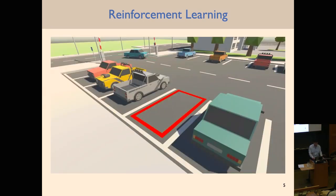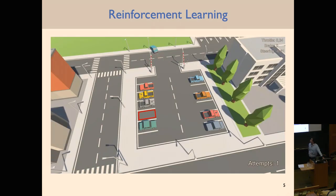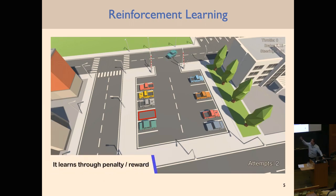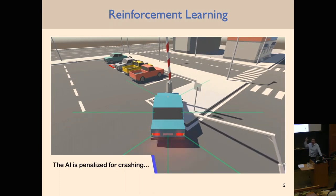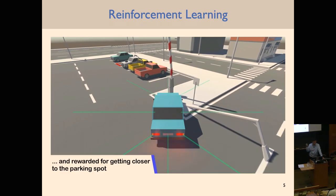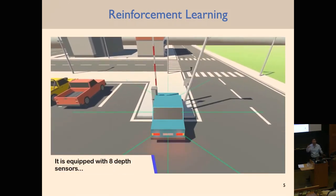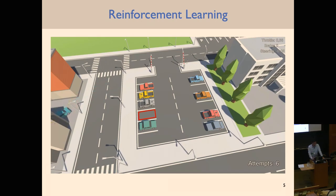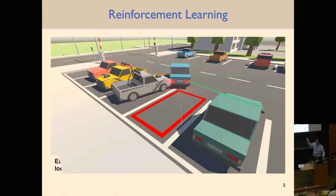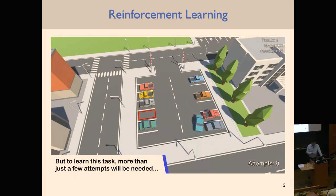That's where reinforcement learning comes in. Here's a video of RL working in practice in a simulator. The goal is simple: the car needs to park itself in the red rectangle. The car tries something and is given a penalty or a reward — if it gets close to the parking spot it gets a higher reward, if it crashes it gets a negative reward. This is basically trial and error learning: it tries something, gets a reward, tries something else, gets a reward, and tries all sorts of things. In the beginning it's very random and crashes into everything.